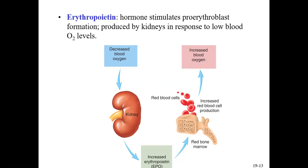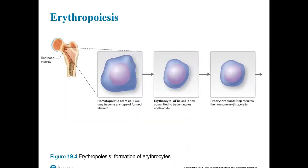Another vocabulary word to know: hematopoiesis or hematopoietic. If you see hematopoiesis, it refers to the formation of blood cells in general. The hematopoietic stem cell can develop into any type of formed element — red blood cells, white blood cells, and platelets. If 'erythro' is added as a prefix, it specifically means the formation of red blood cells.